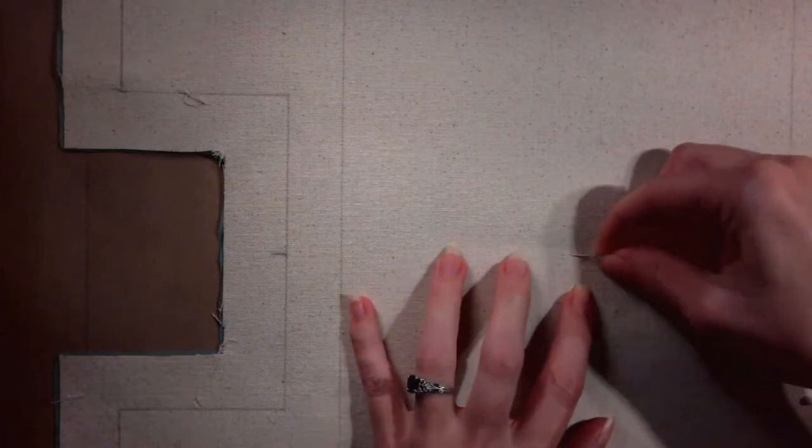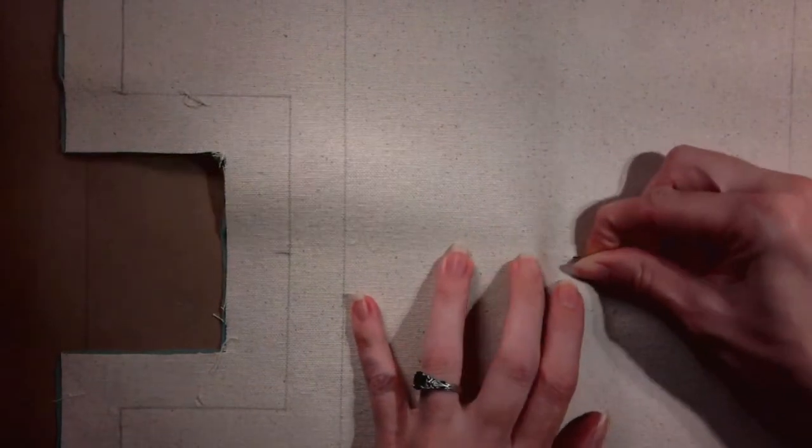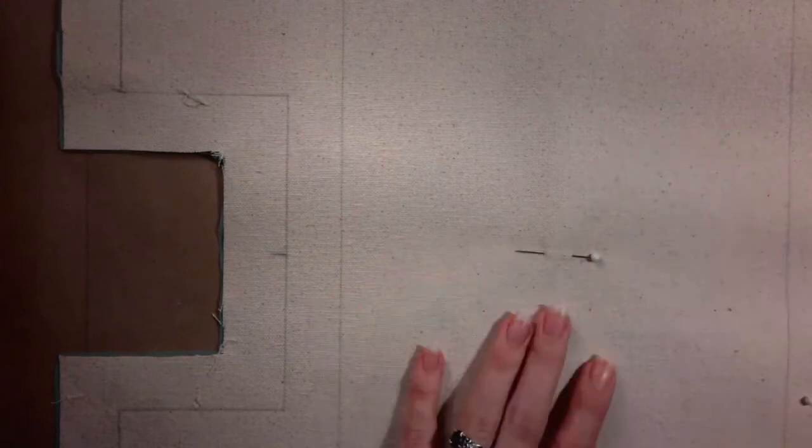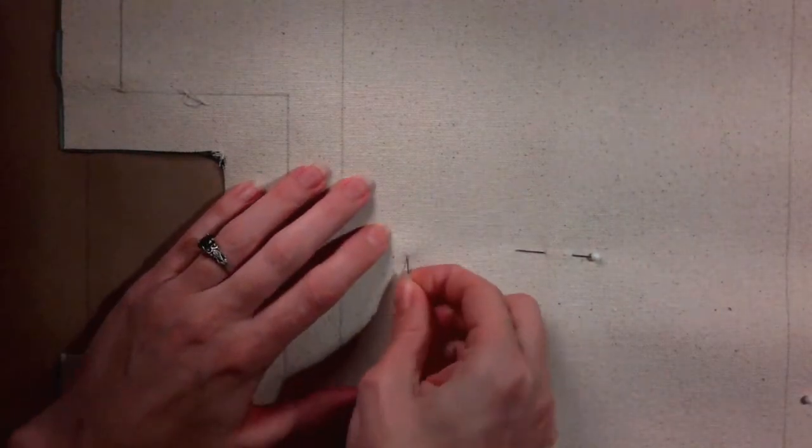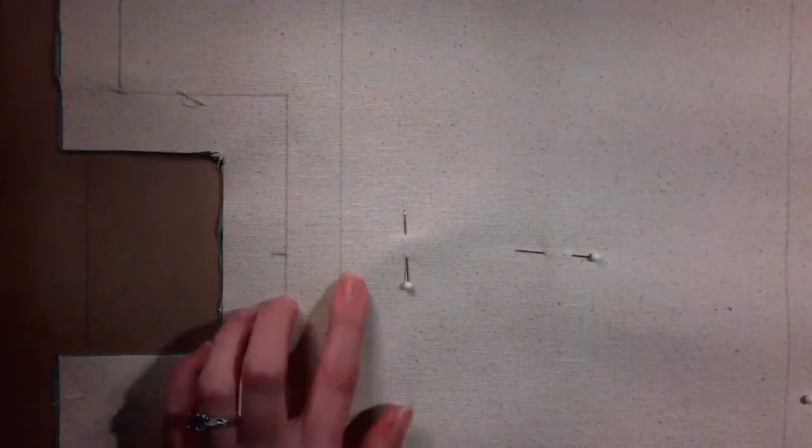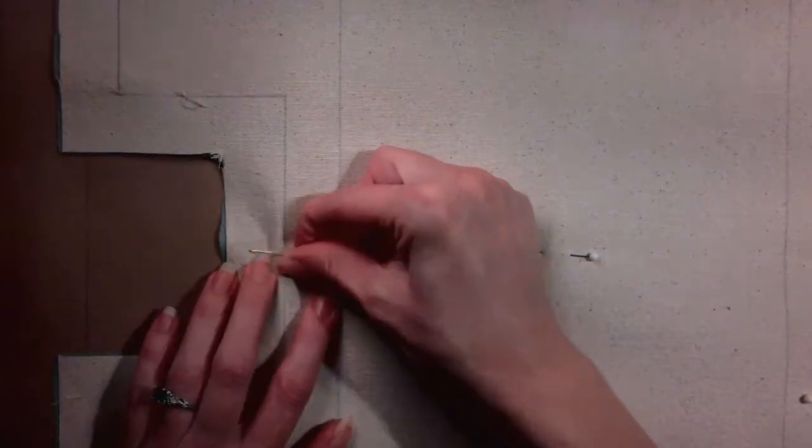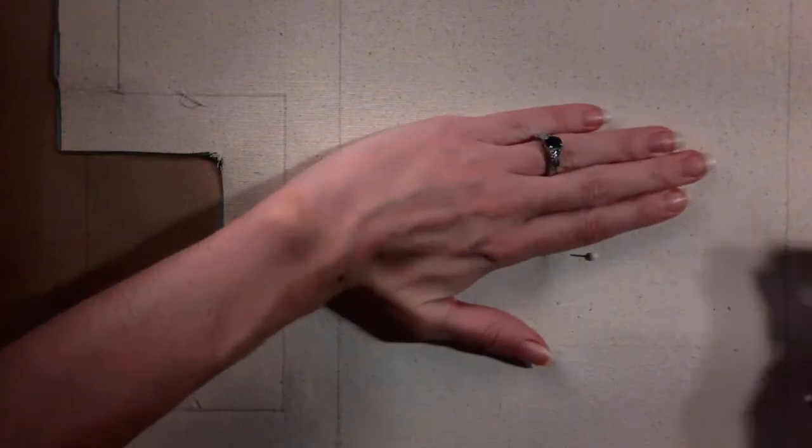Starting in the center, pin the two layers together. Place the next pin about 4 inches or the width of your fingers apart. Alternate the direction of your pins. Continue pinning in this fashion from the center out until you create a grid of pins. Be sure the two layers stay as flat as possible.